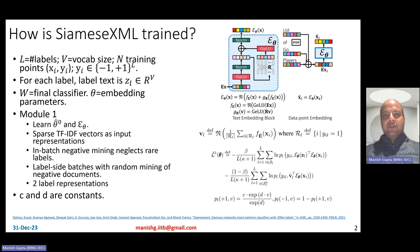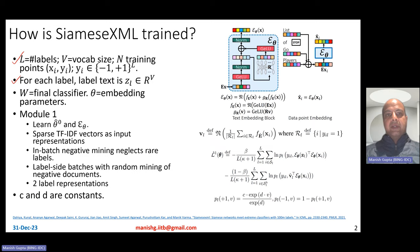How is Siamese XML trained? Before we get into that, a few notations. L is the number of labels, V is vocabulary size, there are n training points denoted as xi, yi, where yi could be minus one or plus one. There are capital L number of labels, and for each label there is also label text. Siamese XML makes use of the label metadata or the text associated with the labels. The overall goal is to learn the final classifiers W while also learning embedding parameters theta.